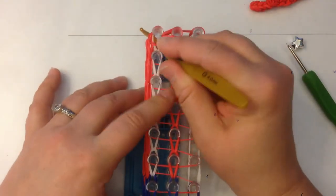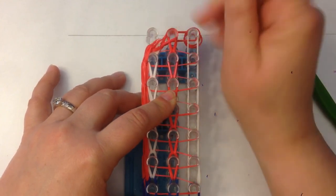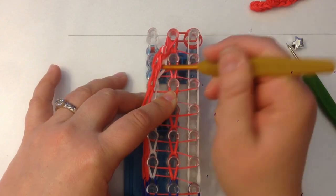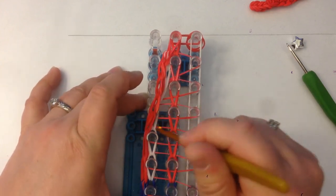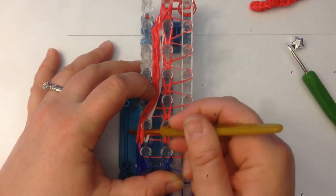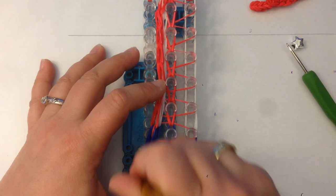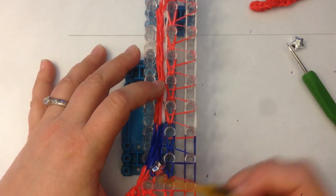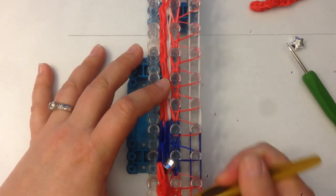We can now take this column off. Just be careful that these don't come off the loom. Everything on that first column can come off.